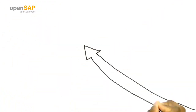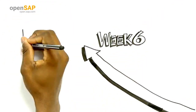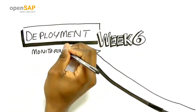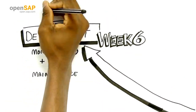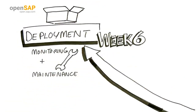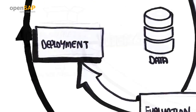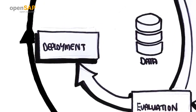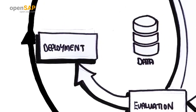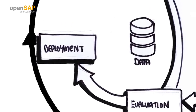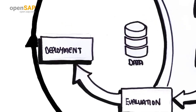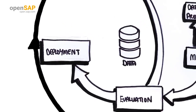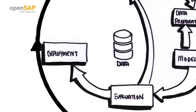In week six you'll learn about model deployment, monitoring and maintenance and we'll debunk some common myths. Throughout the six weeks we will follow the phases of the cross industry standard process for data mining, called CRISP.